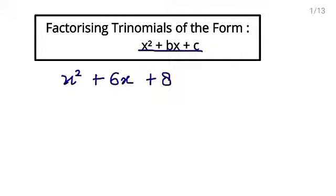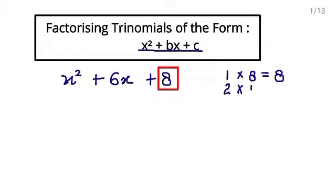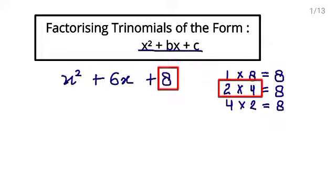Now what we will do? In such trinomials, first of all we will see the constant term, which is 8. Then we will find the factors of 8. Start with 1: 1 times 8 is 8. Then 2 times 4 is 8. 3 is not in the table of 8. Then 4 times 2 is 8 — but these factors 2 and 4, and 4 and 2 are the same, so repetition is not required. I will remove this.